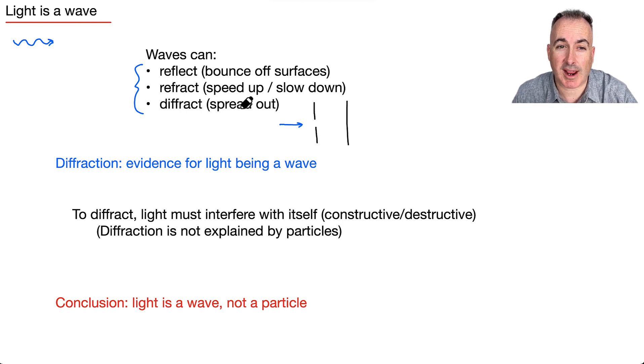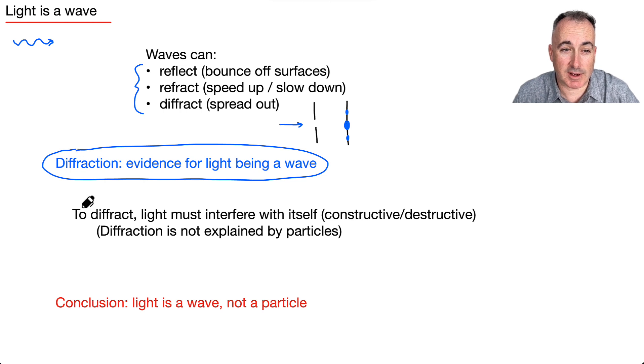So that means that you can take light, pass it through some small opening, and light will end up making these weird patterns. Like, you know, it's going to be bright in the middle, maybe, and then it's dark, and then another spot like this here. This idea of diffraction right here, diffraction is evidence that light is a wave. And that's because to diffract, light has to interfere with itself. So in other words, we're talking about constructive or destructive interference. And it turns out diffraction cannot be explained by particles. So that means light must be a wave, cannot be a particle.